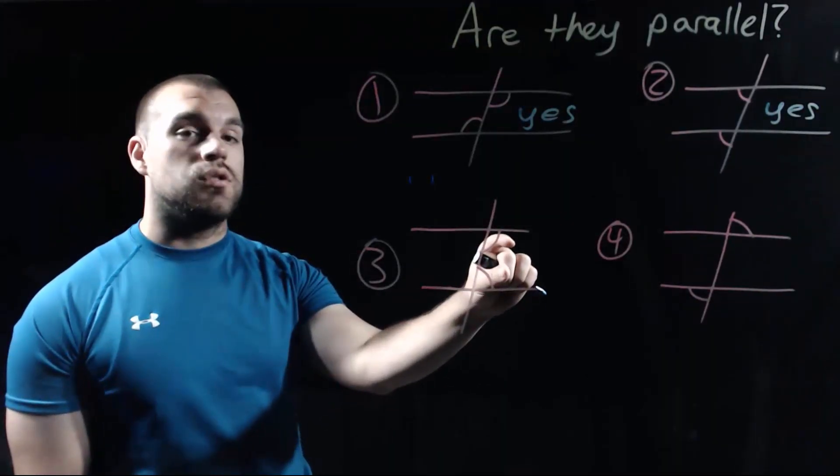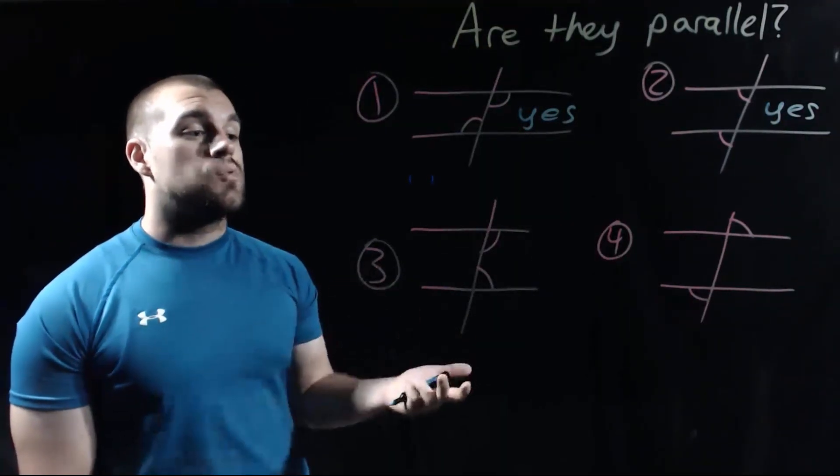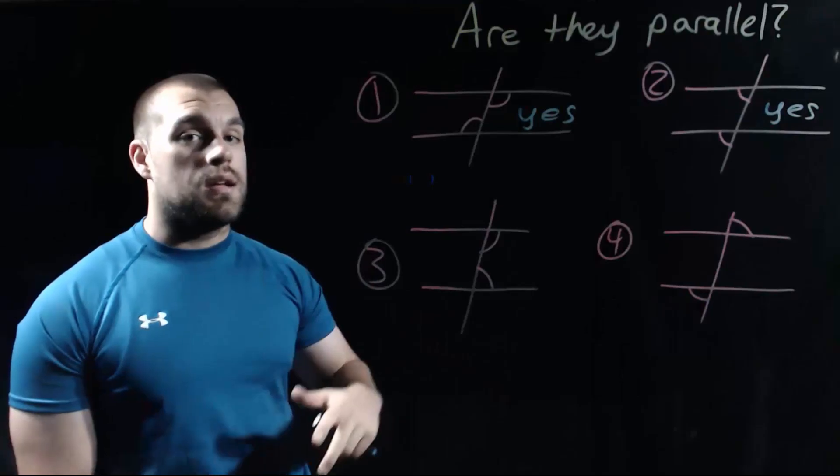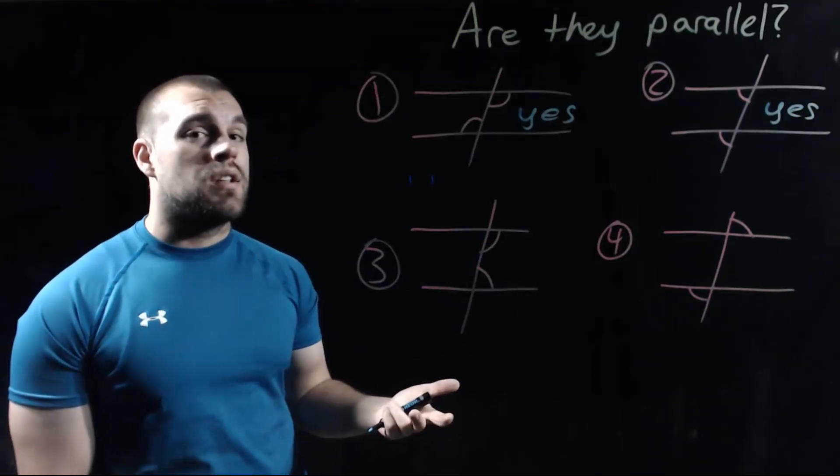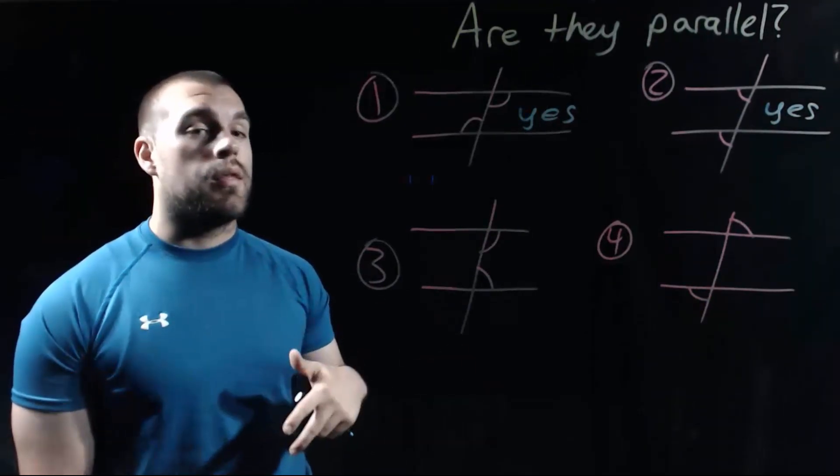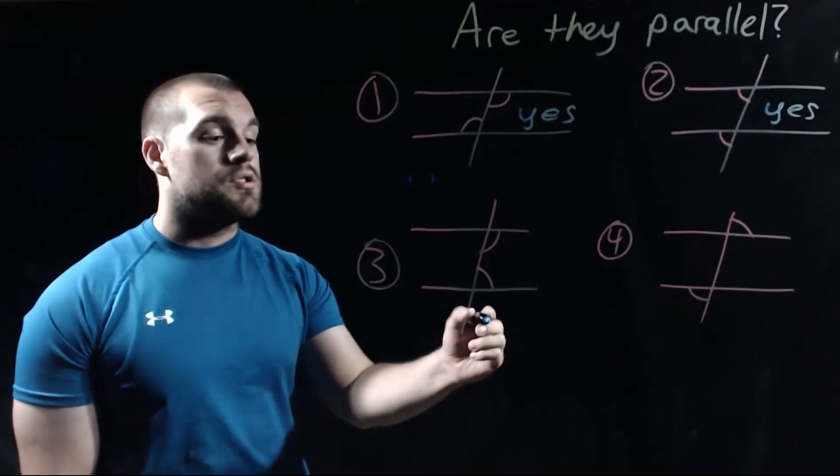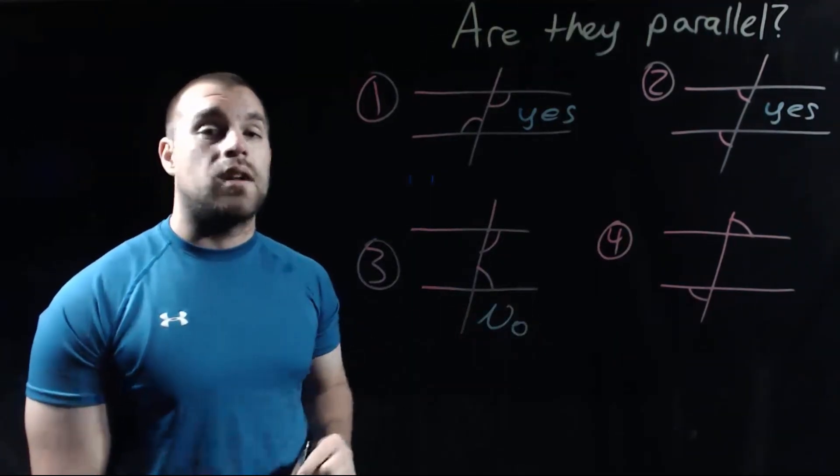For number three, we've got these two angles being congruent. These would be considered consecutive interior angles. Now, we don't want consecutive interior angles to be congruent. We want those things to be supplementary. So this one I would say no, we don't have enough information there.